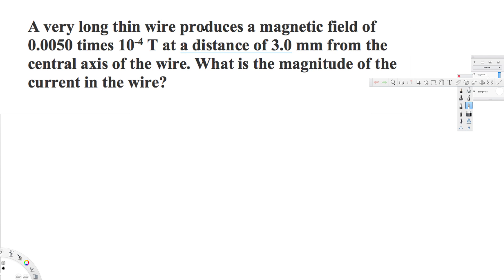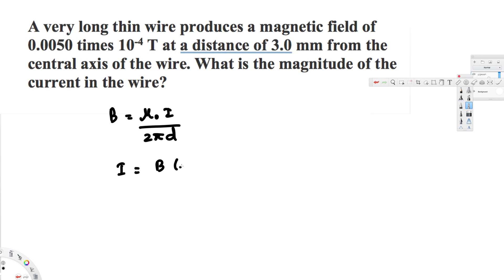Since this is a very long thin wire, we know that the magnetic field is given by B equals mu-naught times I divided by 2 pi times d. The question is asking us to find the magnitude of the current, so we rearrange: I is going to be equal to B times 2 pi times d divided by mu-naught.